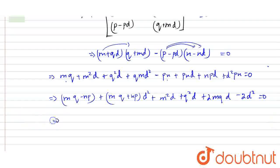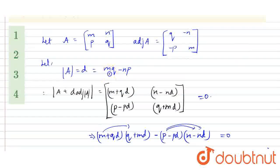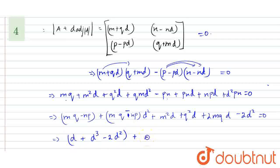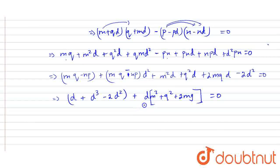Okay students, now I'm going to substitute the value here. MQ minus NP equals D, so wherever MQ minus NP appears, I substitute D. So this one is D, this one is D, this one is D. After substitution: D into D square equals D cube, minus 2 into D square, plus D times (M² + Q² + 2MQ), taking D common outside, which equals 0.